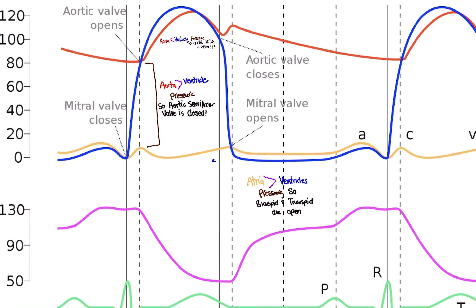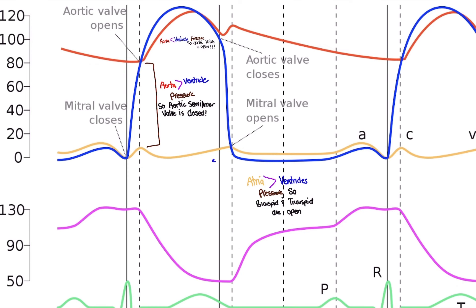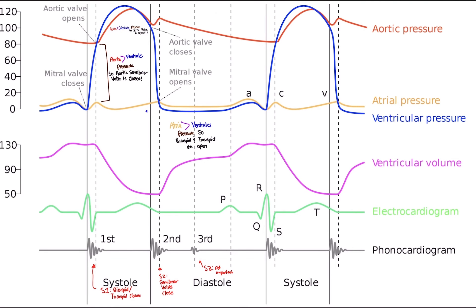Just to note: pressure increases on the y-axis, so pressure increases as we go up. The other line we also need to focus on is the ventricular volume line — the higher it goes, the more blood that's in the ventricles.